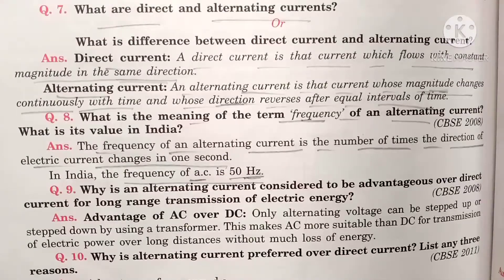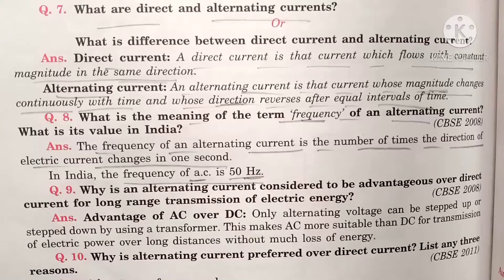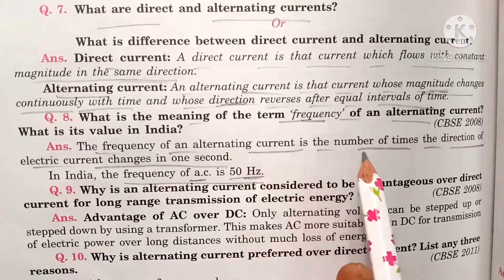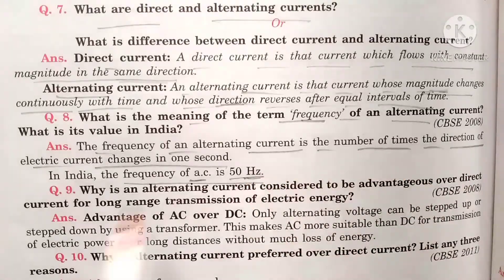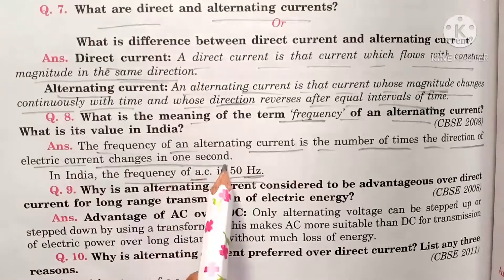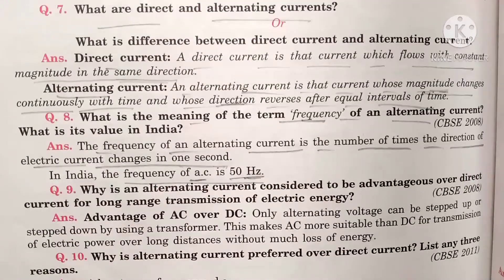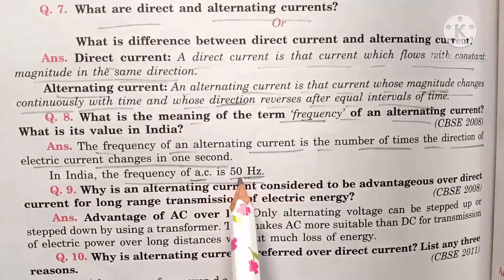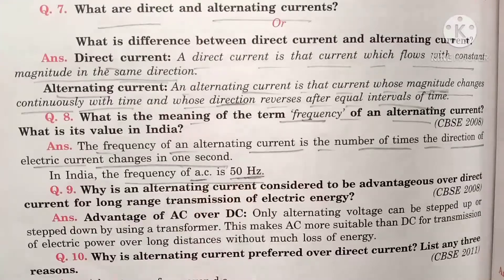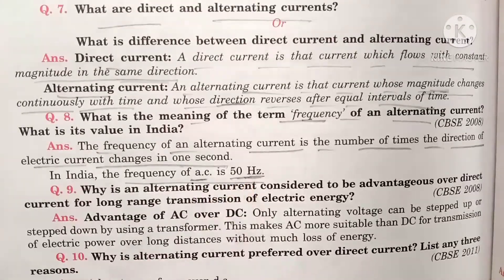Frequency means the number of times the direction of AC changes in one second. In India, the frequency of AC in homes is 50 hertz, and hertz are the units of frequency.